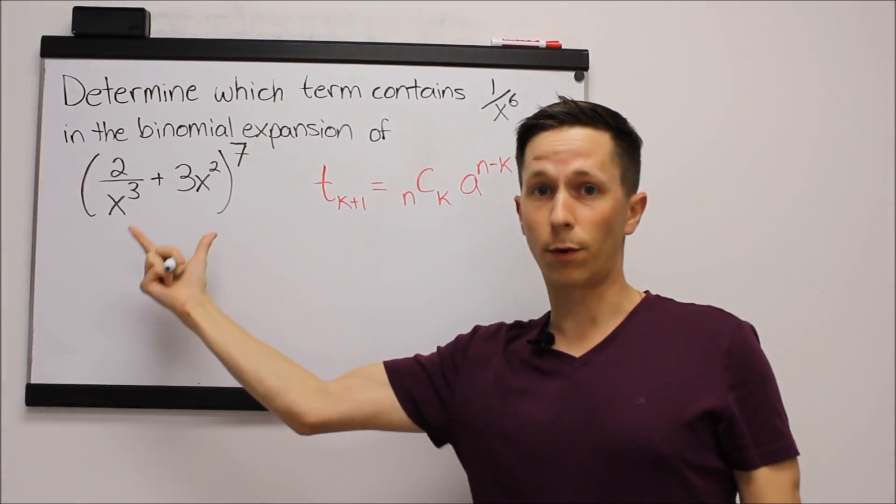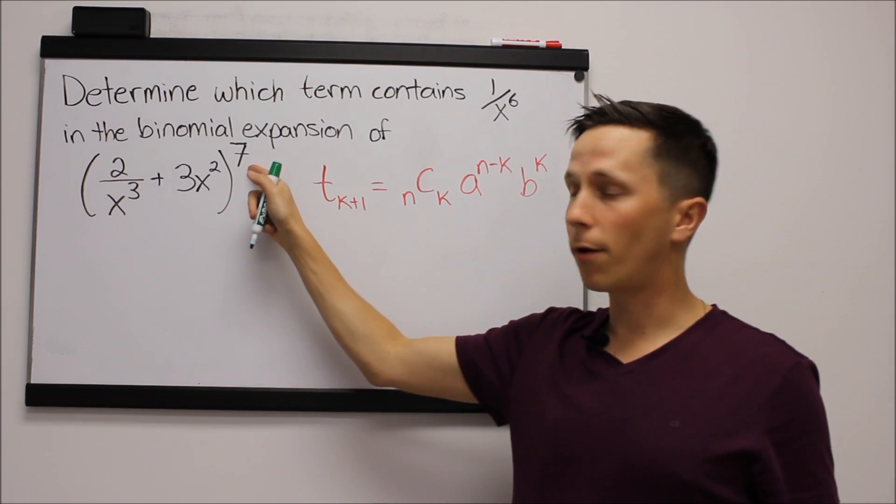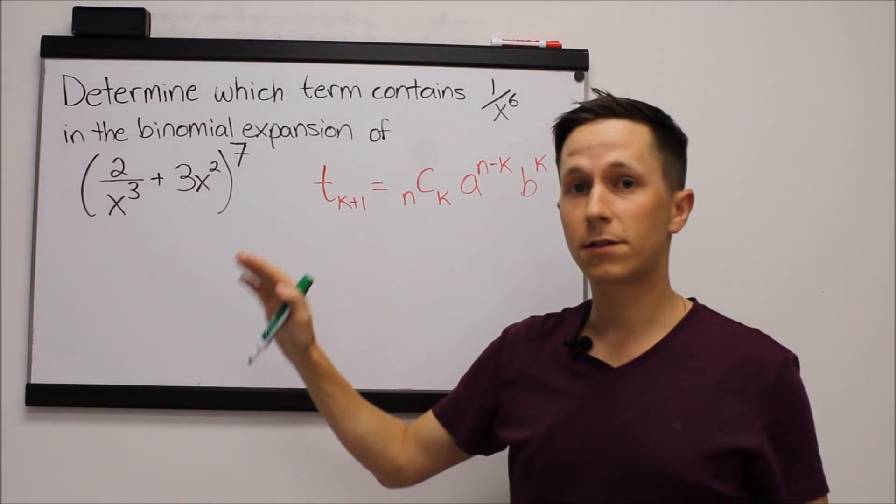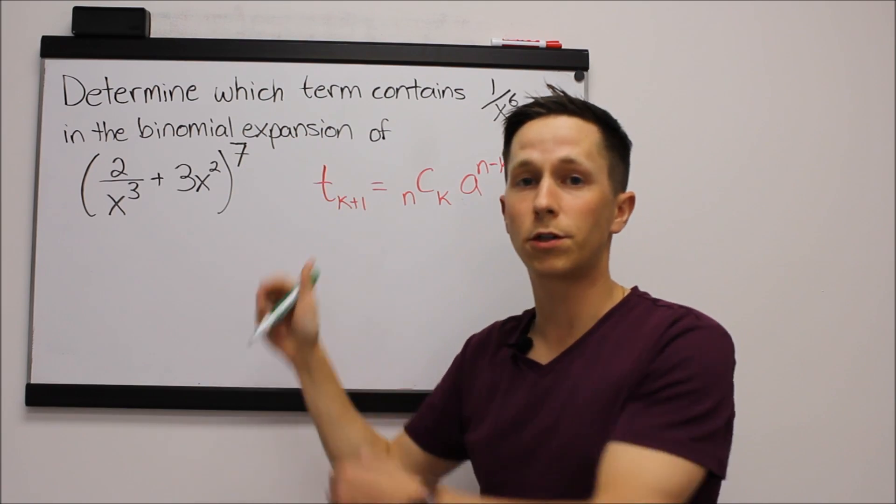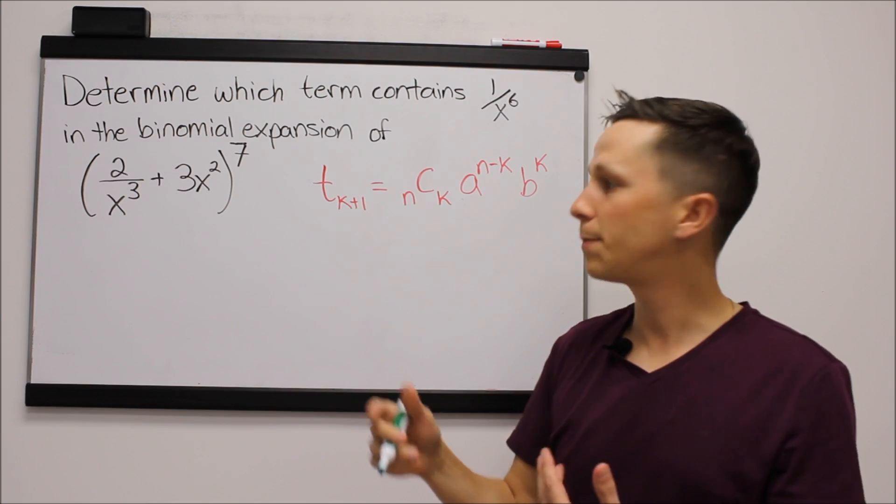There's two terms added together within the bracket and then it's raised to a power. It's important to note that this power is very significant. The number seven there in the expansion of this, there's going to be seven plus one terms, so there's actually going to be eight terms in the expansion of all of this.